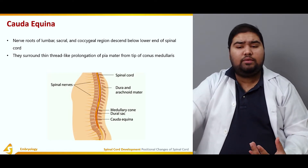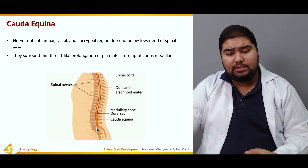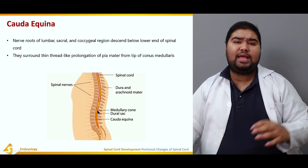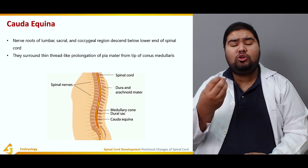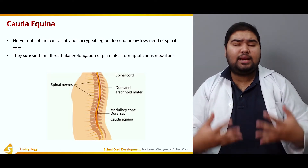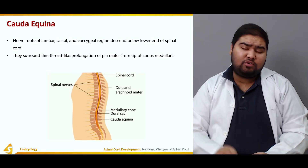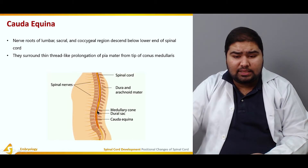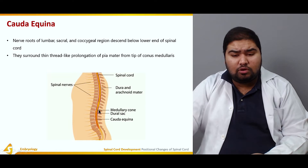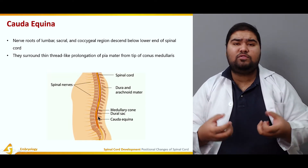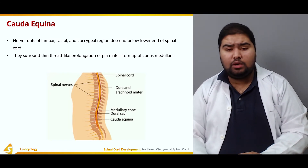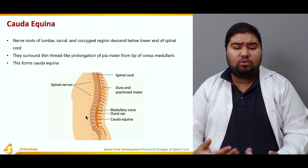Below the termination of the spinal cord, these nerve roots surround a thin thread-like prolongation of the pia mater, which forms the tip of the conus medullaris. Here you can see the spinal cord ending, and from the end of the spinal cord — from the tip of the conus medullaris — arise these thread-like prolongations of pia mater that surround the nerve roots lying below the terminated spinal cord.